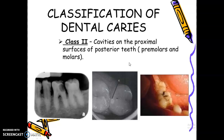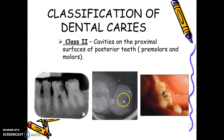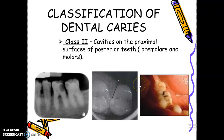So in that case, it would be Class 2. For example, D-O — distal-occlusal. Any cavities on the proximal of posterior teeth will be classified as Class 2, whether mesial or distal.